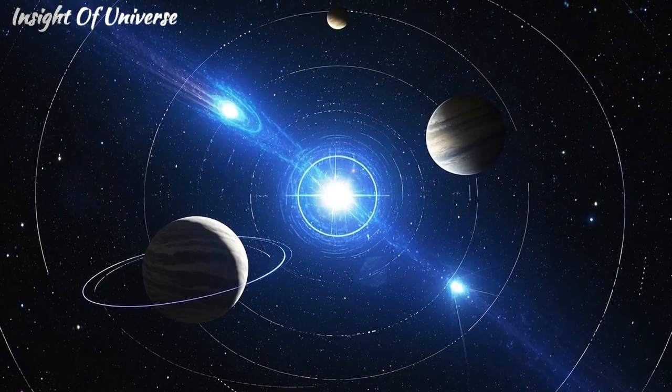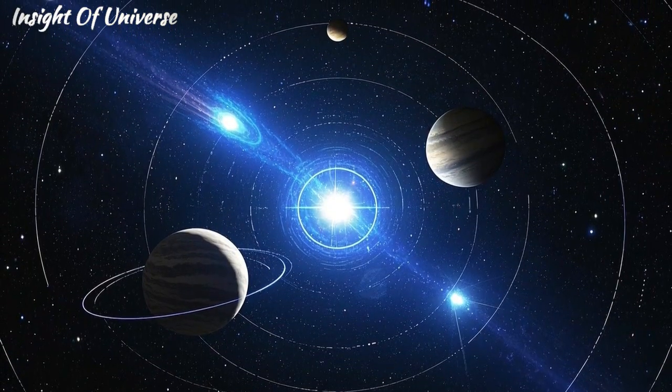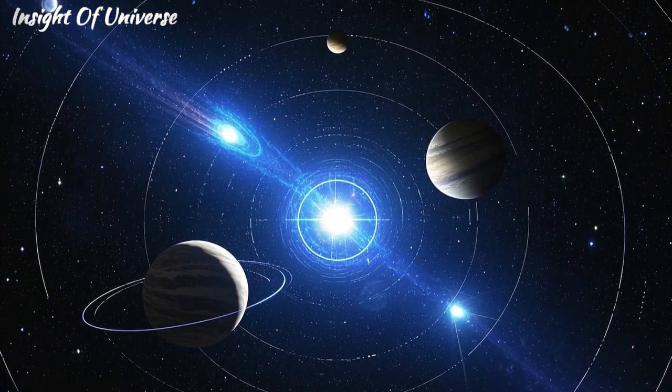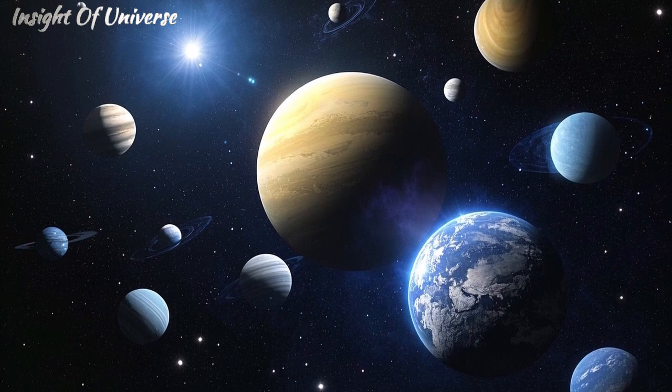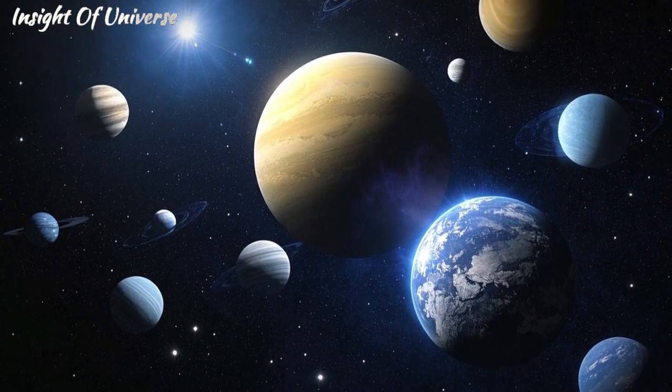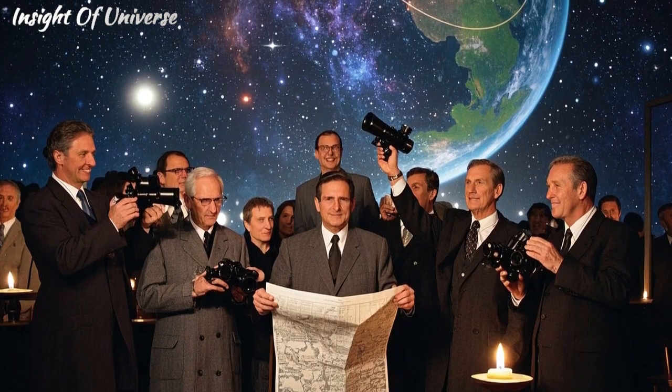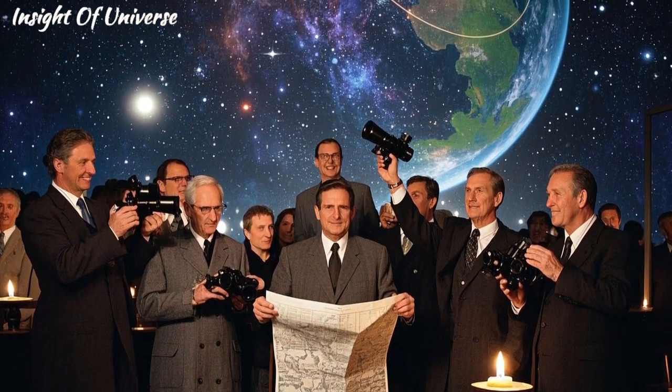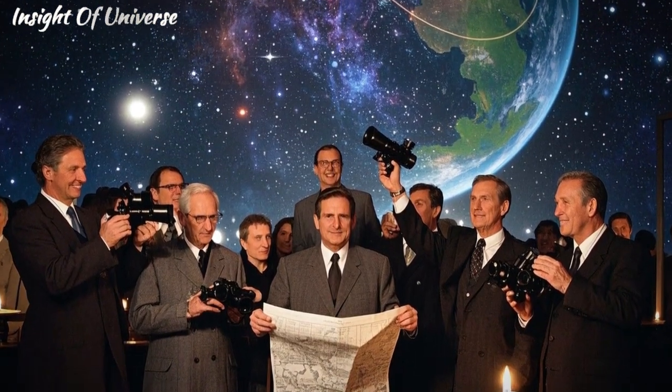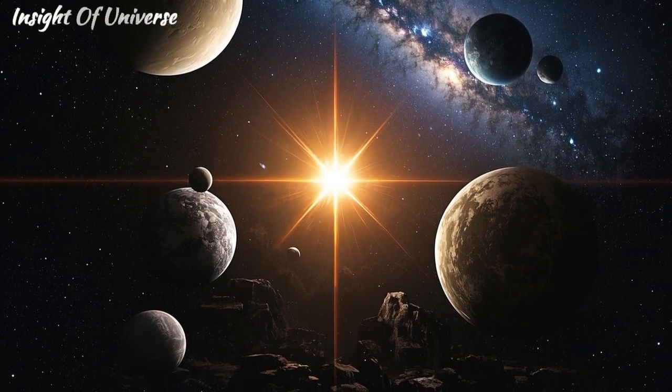Another mystery surrounding pulsars is the possibility of them having planets. Yes, you read that right, planets orbiting pulsars. In 1992, astronomers discovered the first exoplanet around the pulsar PSR B1257+12, 2,300 light-years from Earth.